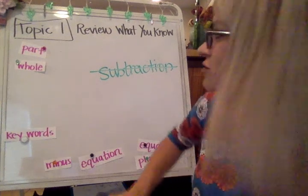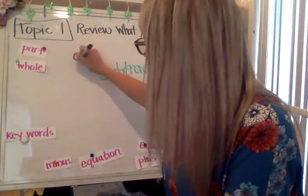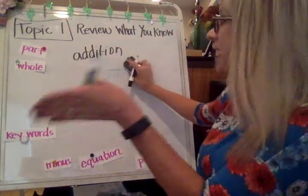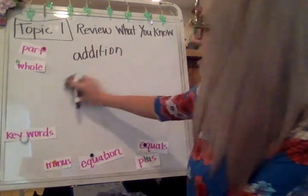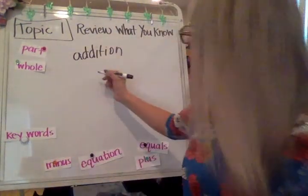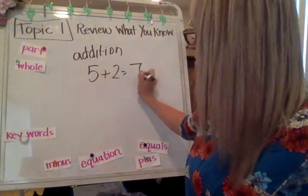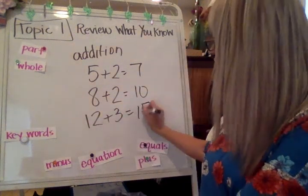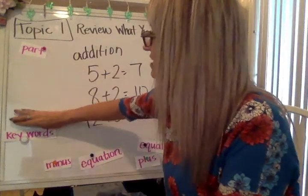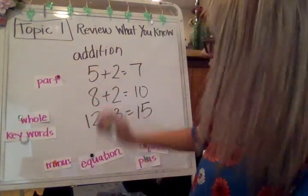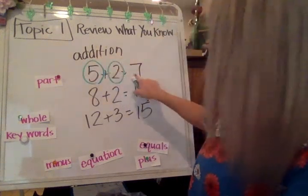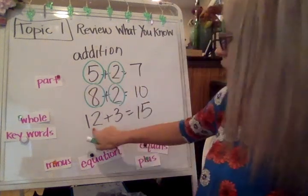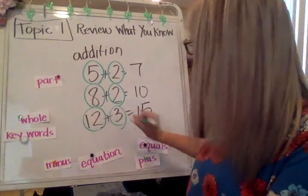I would not talk about part, part, whole when I'm using subtraction. So not for subtraction. We're going to use part, part, whole for addition equations. So not for when we're doing minus. We're only going to do it when we're using that plus sign, the addition sign. So 5 plus 2 equals 7. 8 plus 2 equals 10. 12 plus 3 equals 15. If I was told, find all of the parts, I would circle 5 and 2. Those are the parts of this equation. 8 and 2 are the parts of this equation. And 12 and 3 are the parts of this equation.